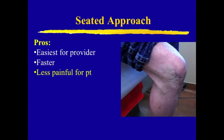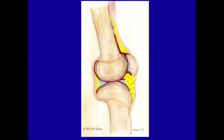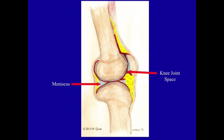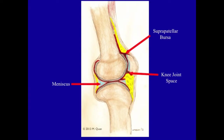However, the cons of this approach are also strong, namely that it's the least accurate position for reaching the knee joint successfully. The reason for this inaccuracy is seen in this diagram where the meniscus and articular cartilages are shown in blue and the knee joint space is shown in black. You can see the joint space follows the shape of the articular surface and extends up into the suprapatellar bursa. When the knee is bent at 90 degrees, the infrapatellar fat pad is anterior to the joint space. Thus, when using the seated knee injection position, depending on the size of the patient and the length of the needle, the needle tip may not be long enough to extend through the fat pad to reach the knee joint.